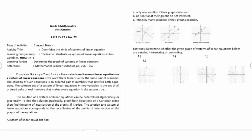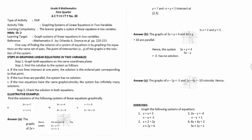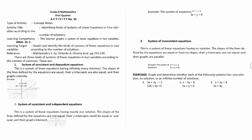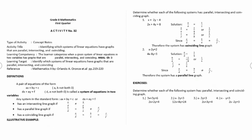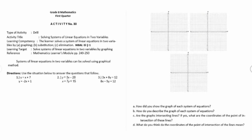Activity number twenty-nine is describing the kinds of systems of linear equations. Activity number thirty is graphing systems of linear equations in two variables. Activity number thirty-one is identifying the kinds of systems of linear equations in two variables according to the number of solutions. Activity number thirty-two is identifying which systems of linear equations have graphs that are parallel, intersecting, and coinciding.